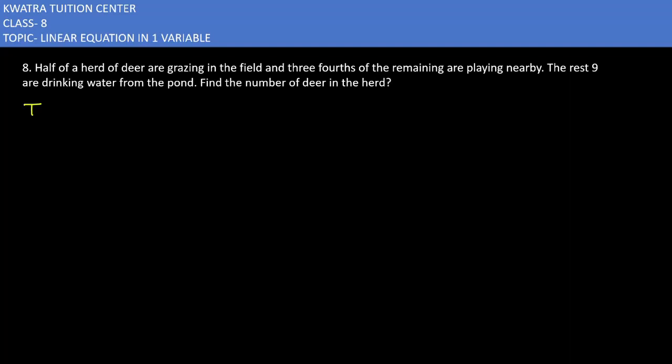Now, we don't know how much the total number of deer is. So we need to set that. Total number of deer, let's say x. Now, what do we have here? Half of a herd of deer are grazing. Number of deer grazing in the field is x over two.